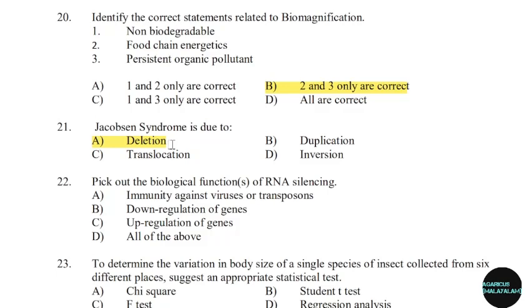22nd question: Pick out the biological functions of RNA silencing. Correct answer: Option D — All of the above.